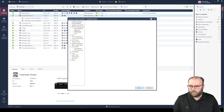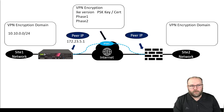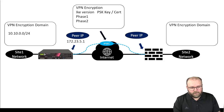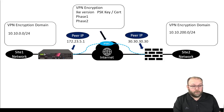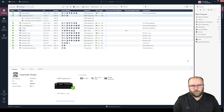Now that we have the peer IP address and the VPN encryption domain for our own gateway, we need to configure the peer side. Let's assume we've gotten information from our partner — they have IP 30.30.30.30 and an encryption domain. To configure this, we need to create an object that represents the partner's gateway.